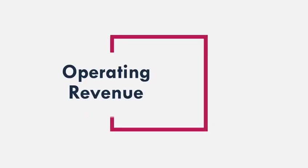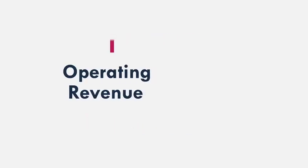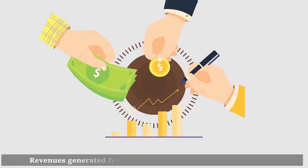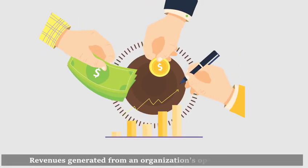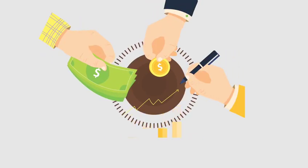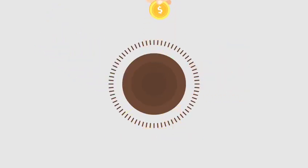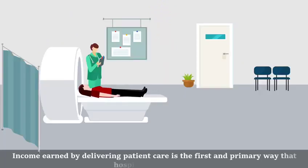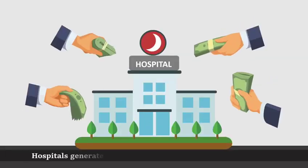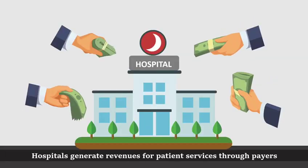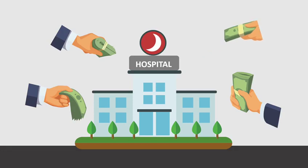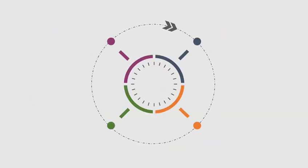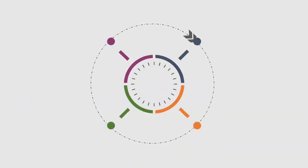Operating revenue refers to revenues generated from an organization's operating activities. Income earned by delivering patient care is the first and primary way that hospitals make money. Hospitals generate revenues for patient services through payers. Payers include second-party payment.